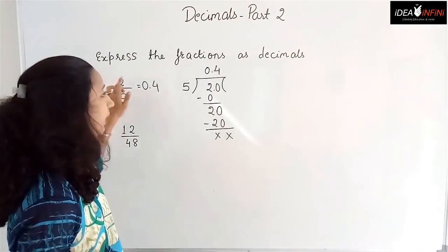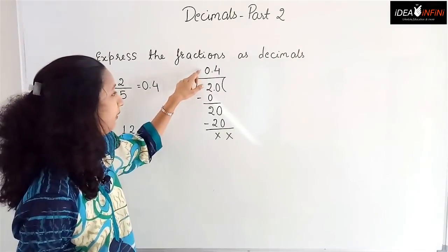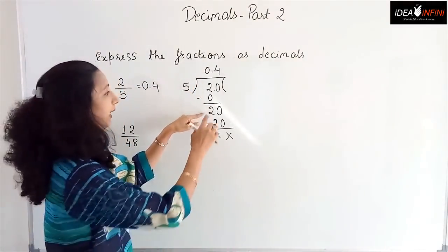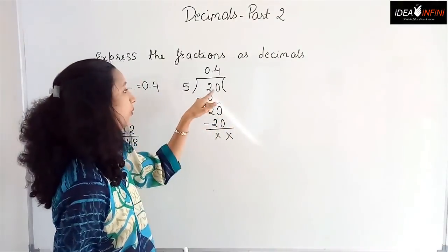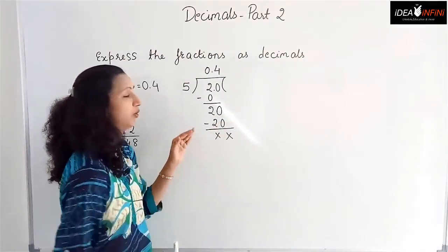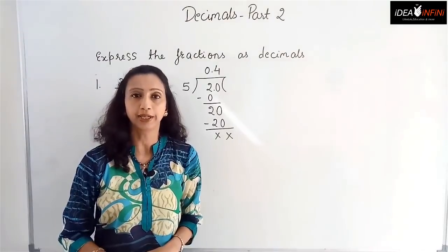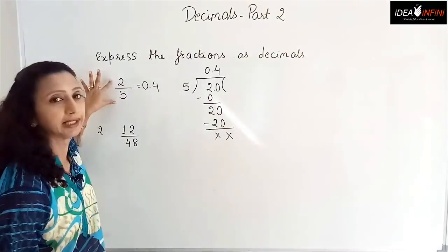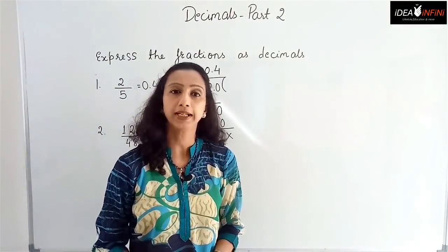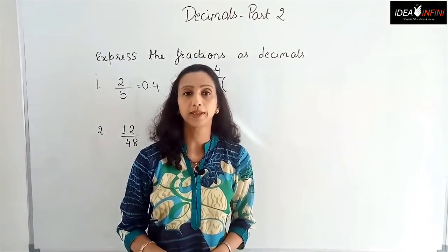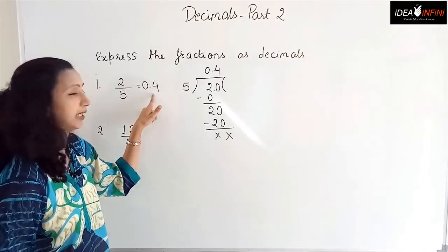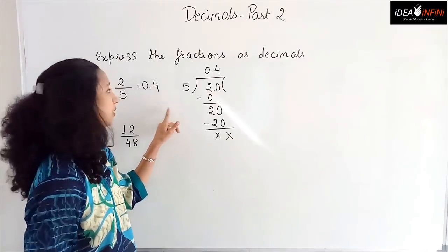Once again: the numerator comes inside, the denominator outside. For 2 by 5, 5 is greater than 2, so we write 0, remainder 2. We put the decimal point and bring down a zero to get 20. 5 fours are 20, remainder 0. Answer is 0.4. For a proper fraction the answer must be less than 1, and 0.4 is indeed less than 1, so it is correct.